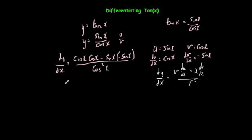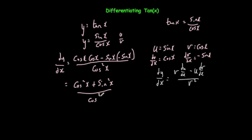Let's simplify this. Cos times cos is cos squared x. Sine times sine is sin squared, and the negative times the negative is plus, so that's plus sin squared x. And that's all over cos squared x. On the top line you have cos squared plus sin squared.